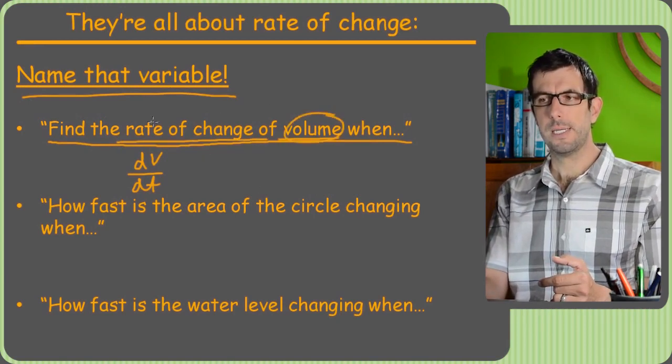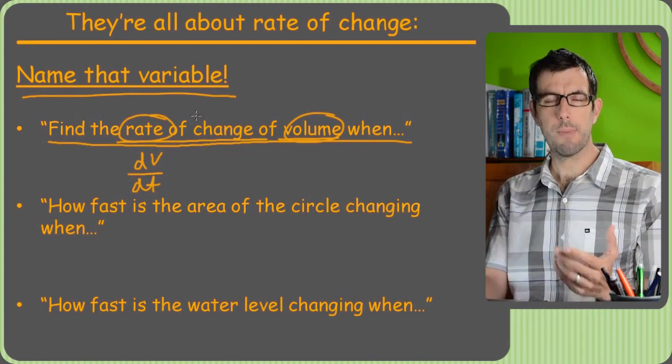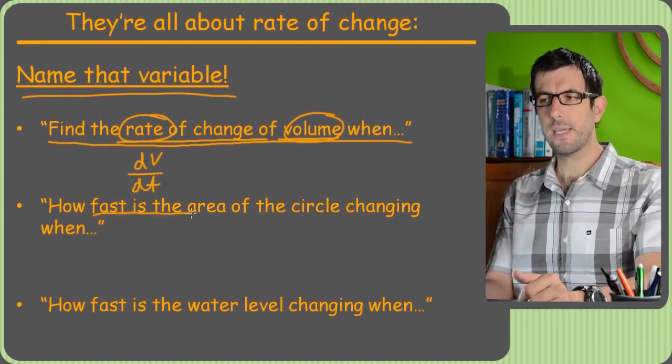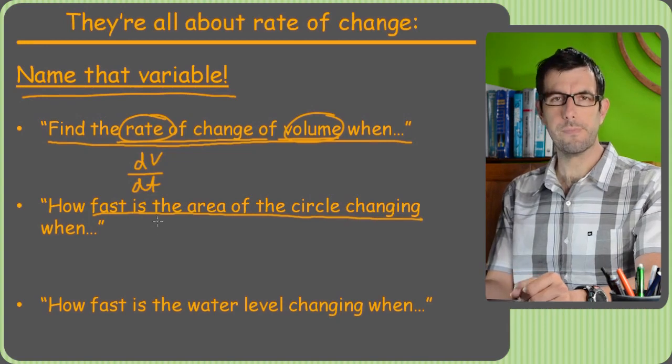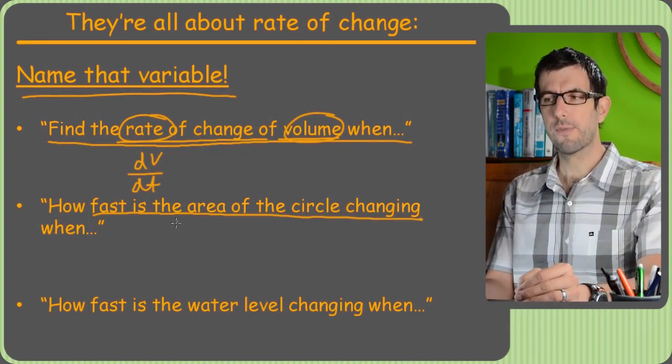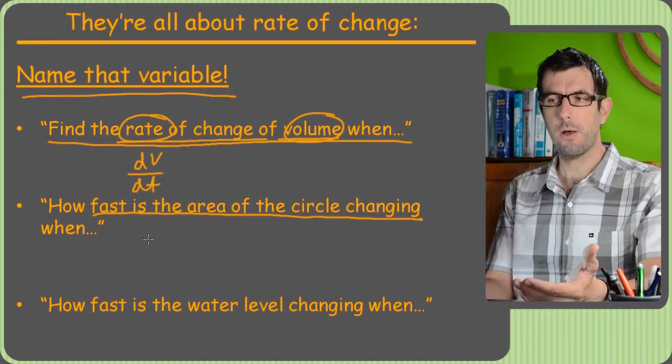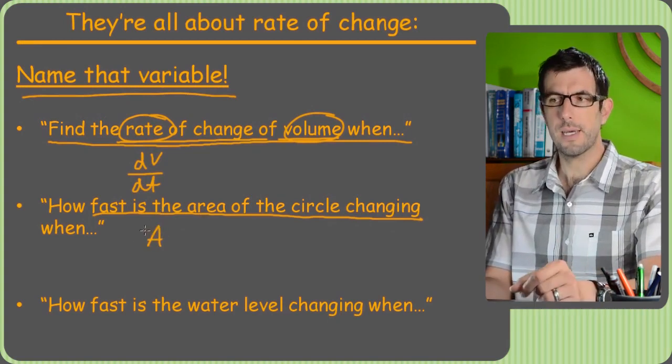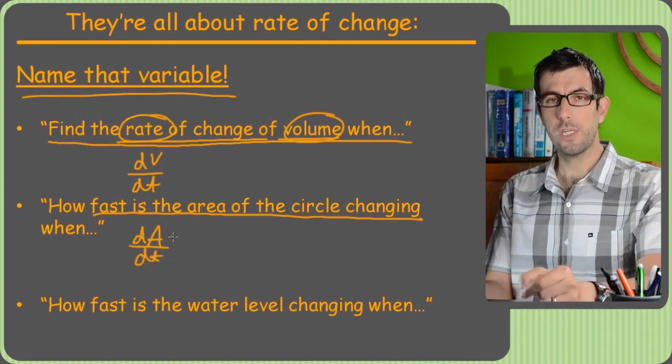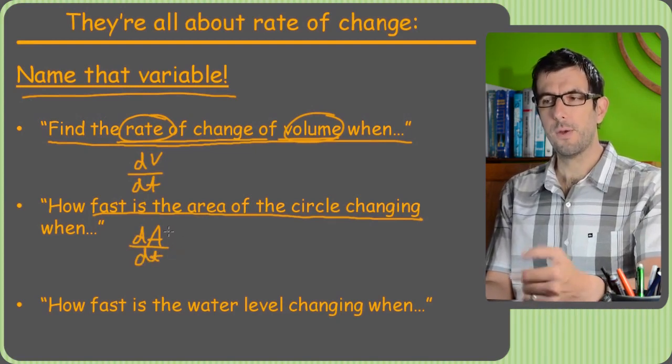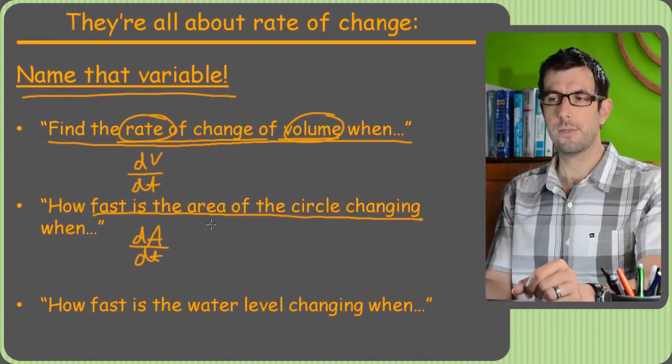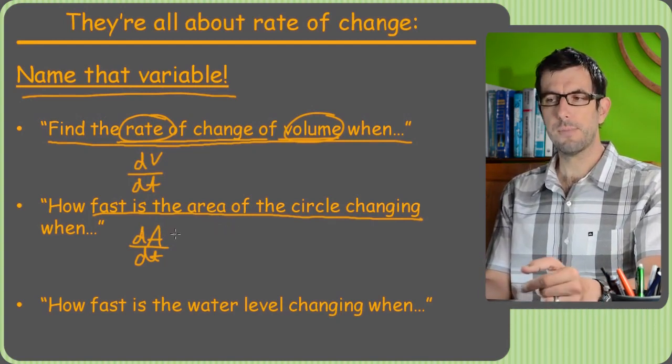Find the rate of change of volume. So that's d volume dt. And rate just kind of automatically means time, like I said. Alright, so let's say they want to know how fast is the area of the circle changing. So what's the name of the variable that they're asking for? Well, they're asking for the rate of change of area. So if we call area A, which makes a lot of sense, then they're asking for dA/dt. So that's the rate of change of area with respect to time.